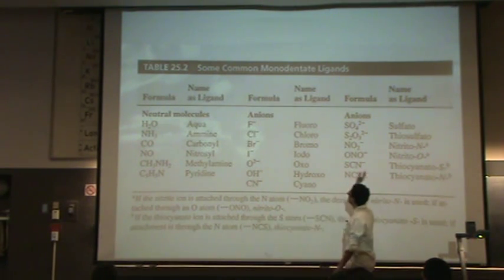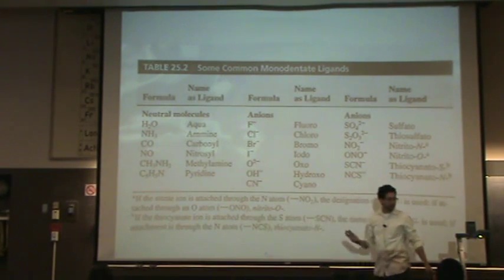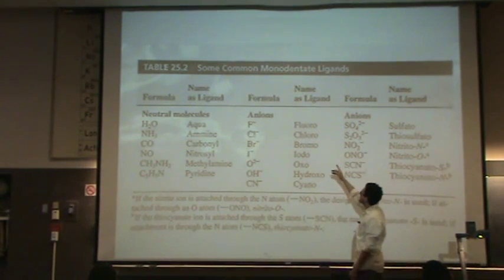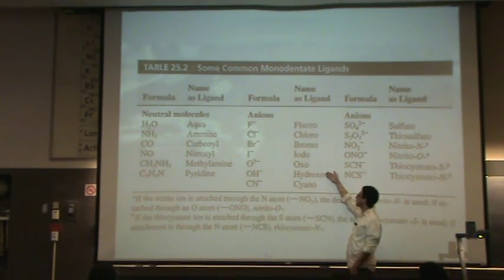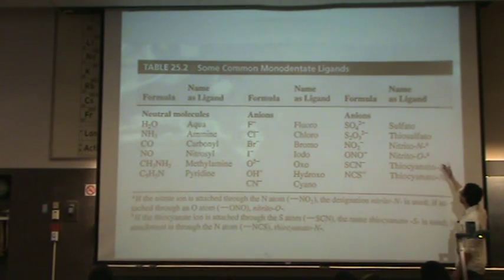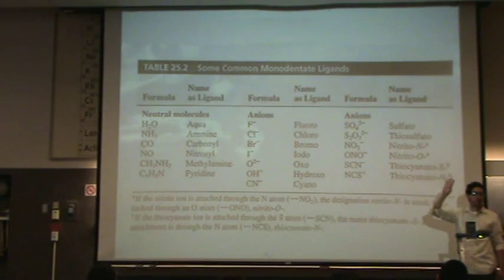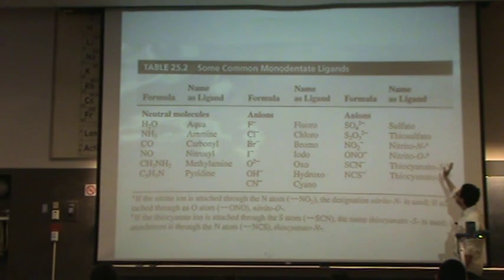Over here on these two categories, we have the negatively charged ligands. Whenever you have a negatively charged ligand, you put the suffix O. So fluorine is fluoro, chlorine chloro, bromo, iodo. Oxo from oxygen or oxide. Hydroxyl turns to hydroxo. Cyanide, cyano. Over here, same thing, notice all the O endings. Sulfate, sulfato. If it was sulfite, it was sulfito. Thiosulfato, nitrito.